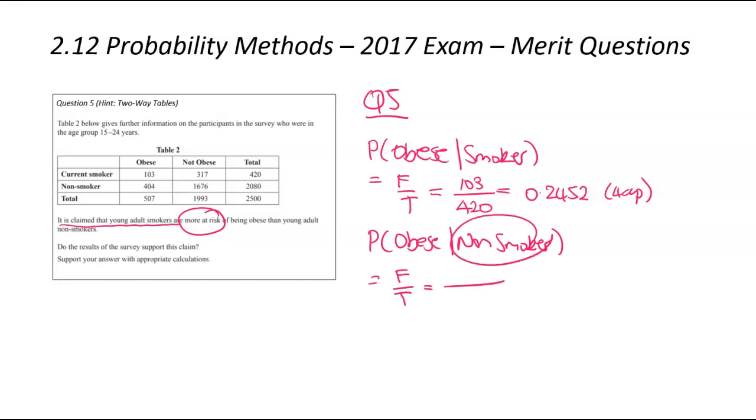And we plug that into our calculator to find out that 0.2452, and that was 4DP rounding. So 0.2452 is the probability that if someone smokes, that they're obese. We then do the same with the second question, F over T. We only care about the non-smokers this time, so that's our total down the bottom. The non-smokers, 2080. Of those 2,080 smokers, how many of them are obese? We've got 404. And that there has a probability of 0.1942. So that there had a 4DP rounding.